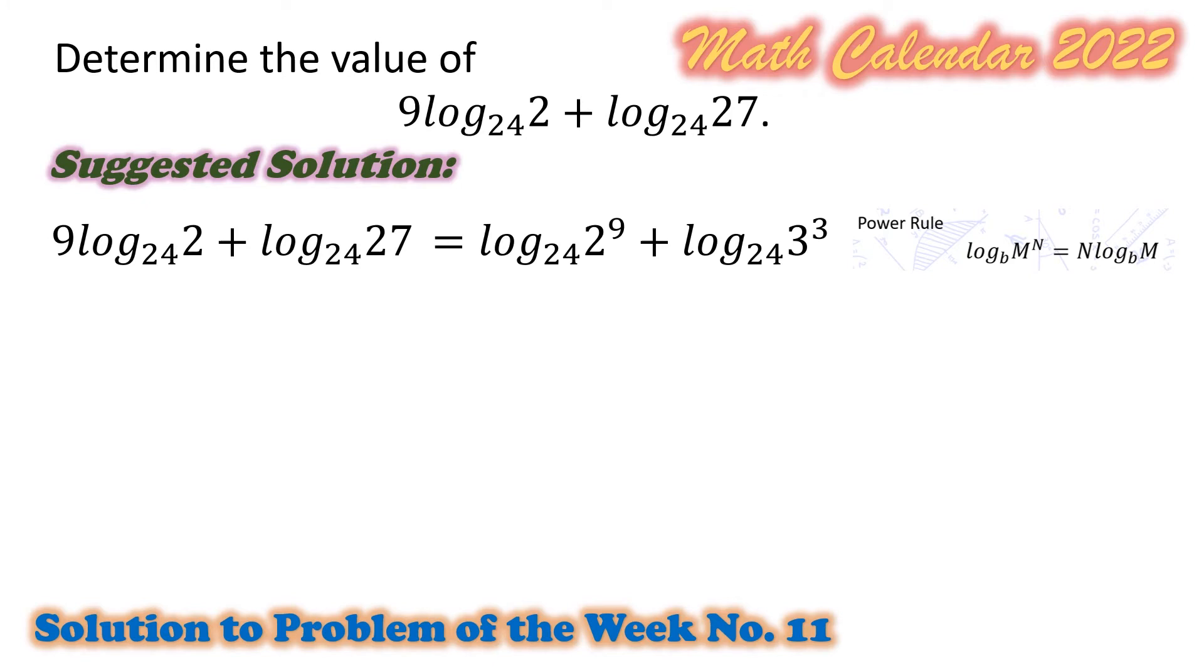Next, the resulting expression may be expressed as logarithm of 2 raised to 9 times 3 cubed to the base 24. And here, we use the product rule of logarithm. That is, the logarithm of m to the base b plus logarithm of n to the base b may be expressed as logarithm of the product m times n to the base b.